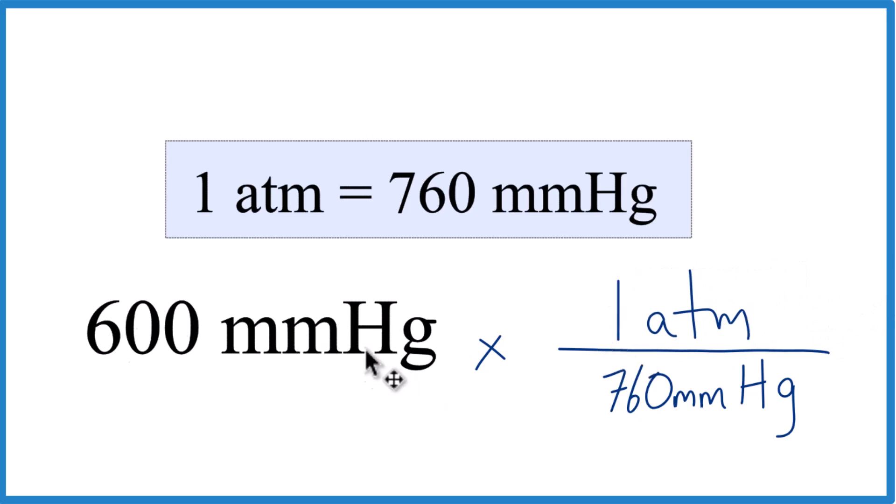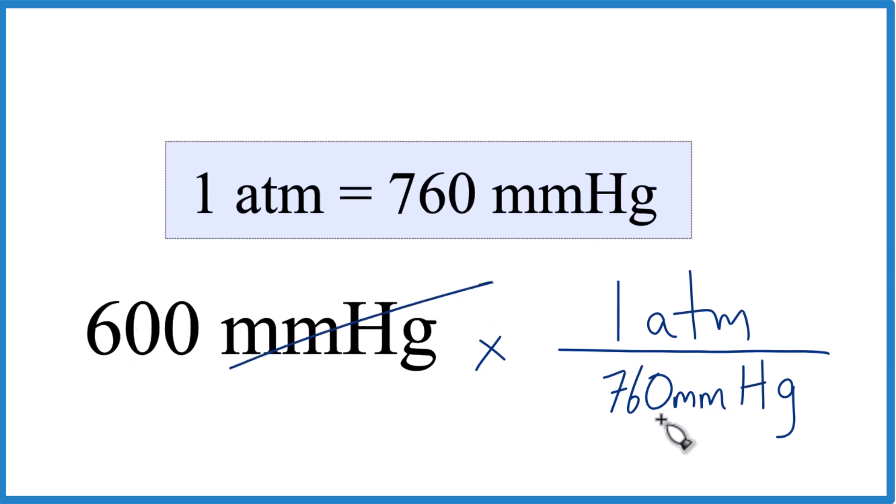Now when we multiply, we have millimeters of mercury on the top and bottom. They cancel out. We're left with atmospheres. So we're dividing 600 by 760.